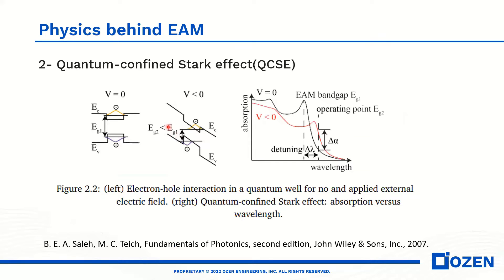For quantum confinement structures, like a quantum well semiconductor — for instance, indium gallium arsenide and gallium arsenide — gallium arsenide has a lower band gap. For this reason, we have confinement of the photon in that region, where we have a larger group index, and we can create a waveguide based on this structure.